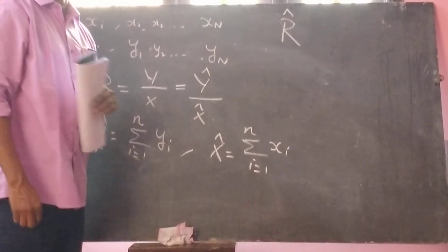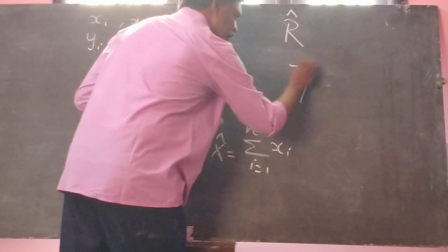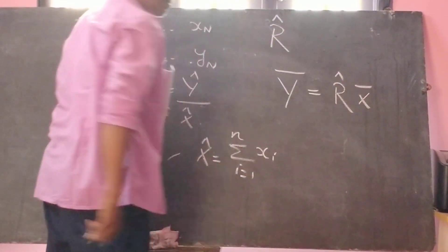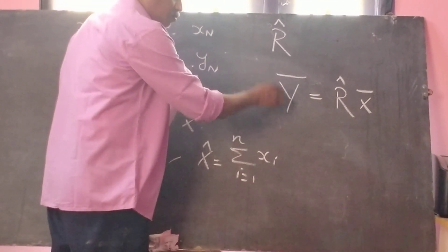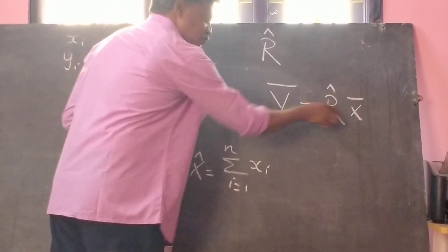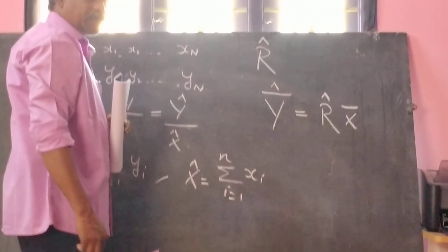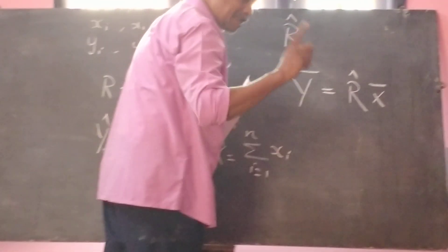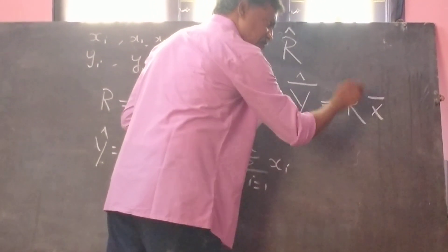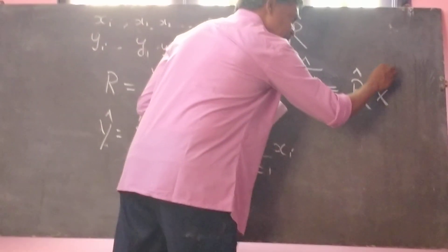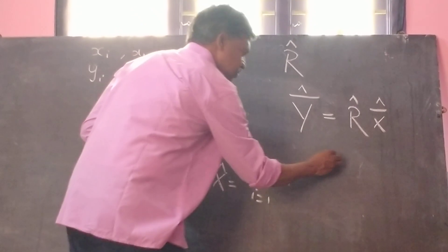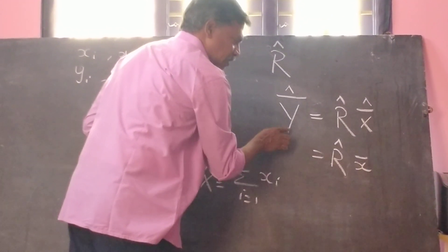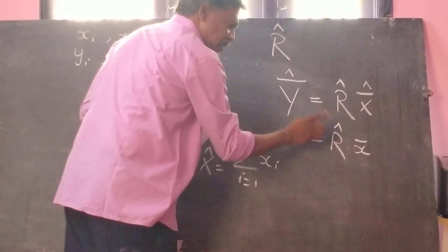Now, the population mean y bar can be estimated by using the formula r_cap into x bar. This y bar is nothing but the population mean, and this population mean is estimated by this formula. So y_bar_cap, the estimated value of the population mean, is equal to r_cap into x bar. x bar is nothing but the population mean of x. Whenever the population mean of x is not available, we put the estimated value of the population mean of x. This is the formula for estimating the population mean y by using the ratio estimator.